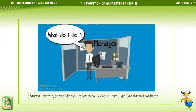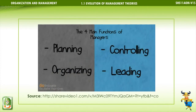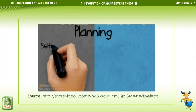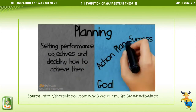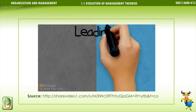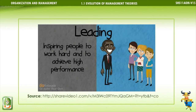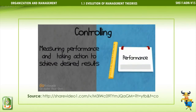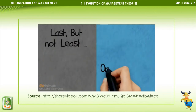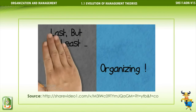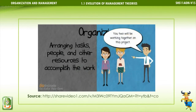Managers are responsible for performing four main functions: planning, organizing, controlling, and leading. The task of planning involves setting performance objectives and deciding how to achieve them, starting with identifying a goal and establishing an action plan to reach success. A good manager performs the leading function by inspiring their workforce to achieve high performance. The act of controlling is done by measuring performance, then taking action if the desired results were not achieved, or rewarding if the results were achieved. Organizing is arranging tasks, people, and other resources effectively to accomplish work.